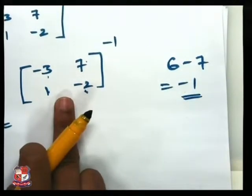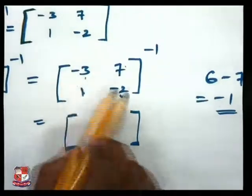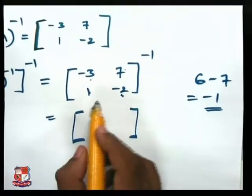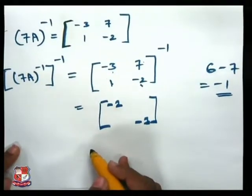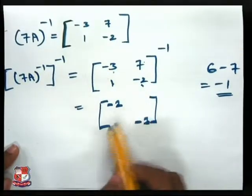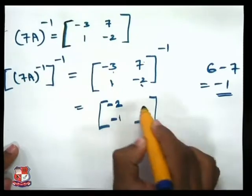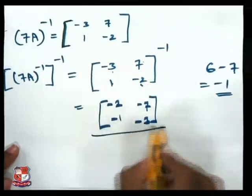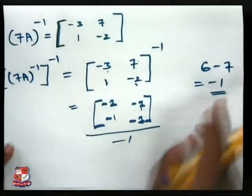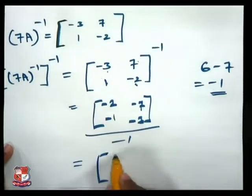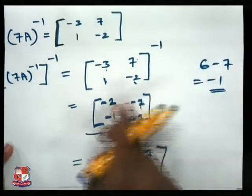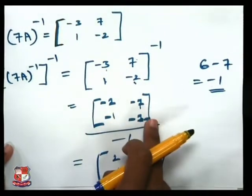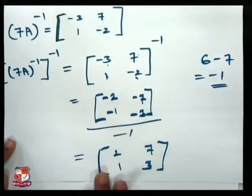For the adjoint of a 2×2 matrix, interchange the diagonal elements and change the signs of the off-diagonal elements, giving [−2, −7; −1, −3]. Dividing by the determinant −1, we get the inverse as [2, 7; 1, 3]. Therefore 7A = [2, 7; 1, 3], and A = (1/7)[2, 7; 1, 3].